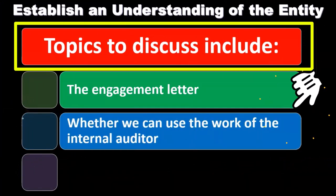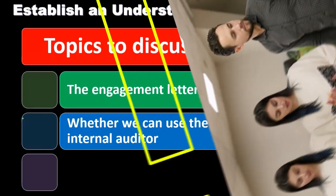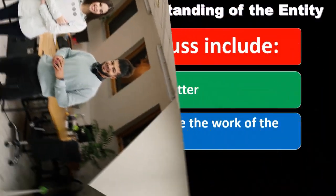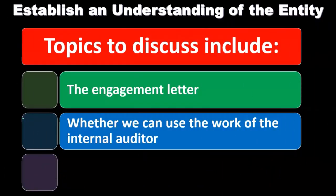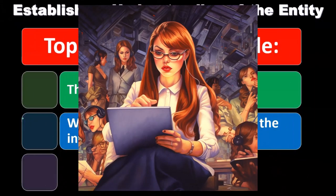Topics to discuss will include the engagement letter, whether we can use the work of the internal auditors. If we're talking about a large engagement, especially for publicly traded companies, they probably have internal auditors — auditors working for the company who receive a W-2. Therefore they don't have the same independence, which is part of the need for us as the external auditor. However, they perform many of the same procedures, so the question is: can we use their working papers, and to what extent, in order to corroborate our evidence?